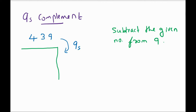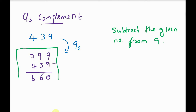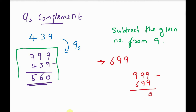We will see an example. To find the 9's complement of 439, we have to subtract this number from 999, since 439 is a 3-digit number, so we take three 9s. 999 minus 439 — we get 9 minus 9 is 0, 9 minus 3 is 6, and 9 minus 4 is 5. So 560 is the 9's complement of 439. Another example: find the 9's complement of 699 — 999 minus 699 gives 300.